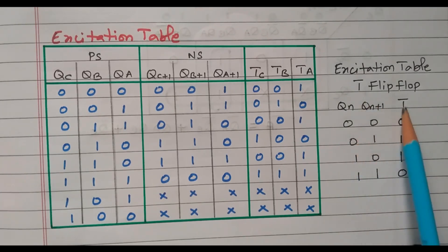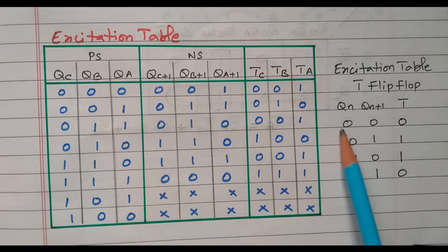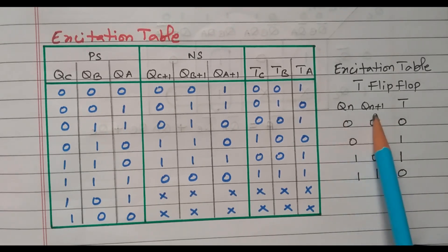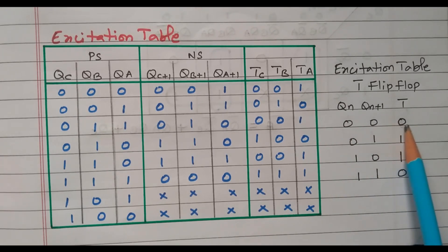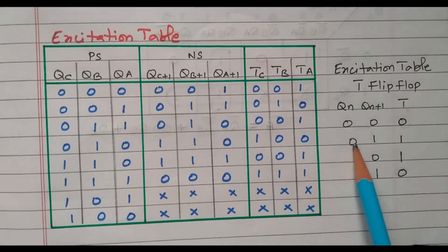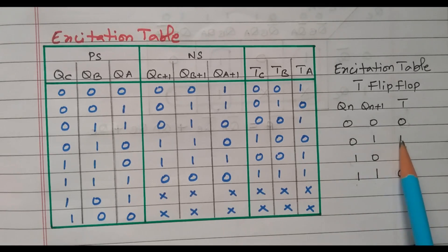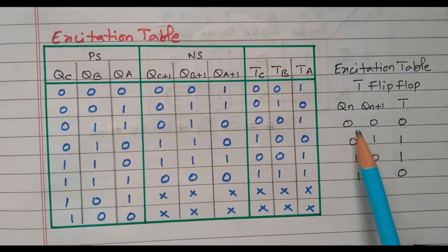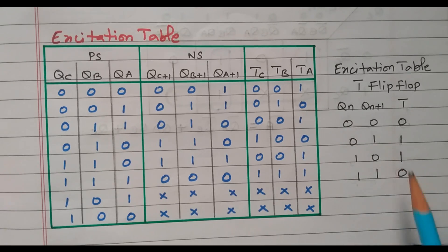The excitation table identifies what input is required for a given state transition. If current state is 0 and next state is 0, the T flip-flop input is 0. If current state is 1 and next state is 1, input is also 0 — no change means T=0. If current state changes from 0 to 1 or 1 to 0, the T flip-flop input is 1. Any change in state means T=1.